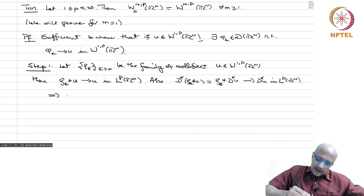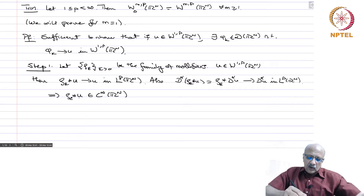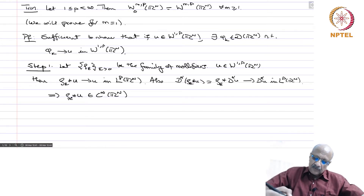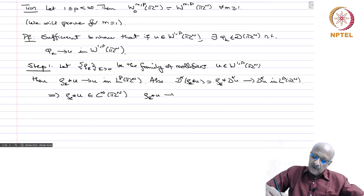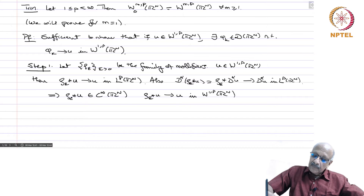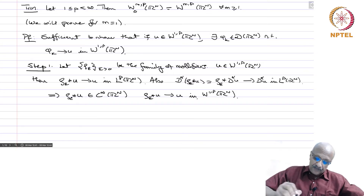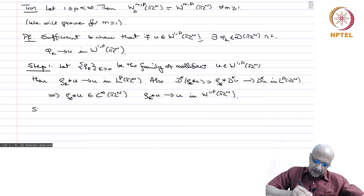Therefore, ρ_ε ∗ u belongs to C^∞(ℝⁿ), because it is a convolution of a locally integrable function — namely an L^p function — and a C^∞ function with compact support. Therefore, ρ_ε ∗ u is in C^∞(ℝⁿ) and ρ_ε ∗ u converges to u in W^{1,p}(ℝⁿ), meaning the function and its derivatives all converge to the correct limits. But we have got a C^∞ function; what we need is a C^∞ function with compact support, so we need to use the cutoff technique.